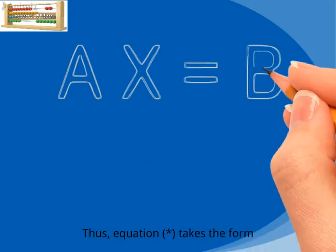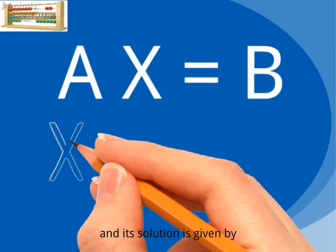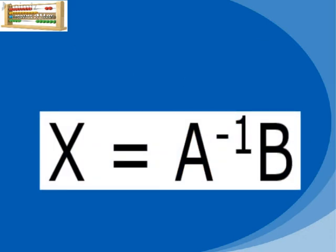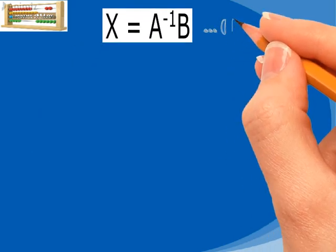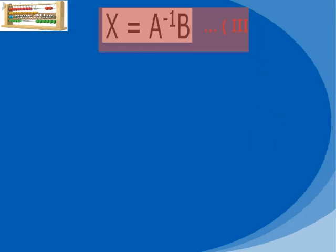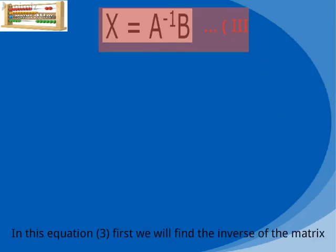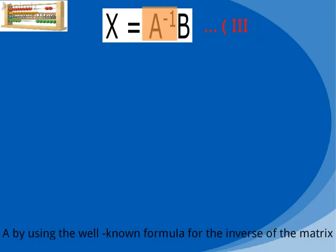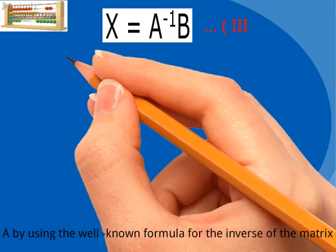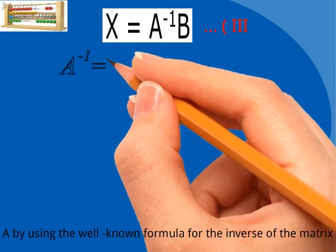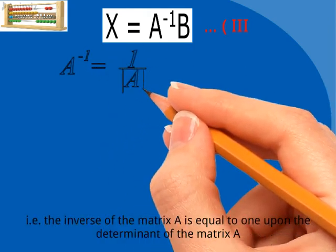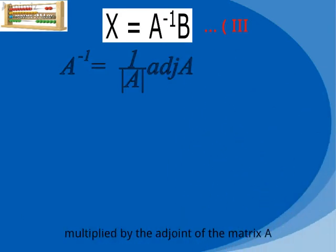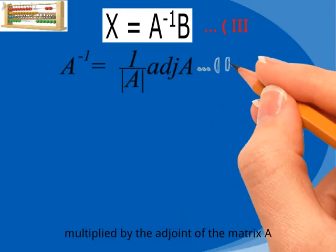Since matrices are denoted by uppercase letters, we denote the coefficient matrix by A, the matrix of unknown variables by X, and the matrix of constants by B. Thus, the equation takes the form AX = B, and its solution is given by X = A inverse times B. Let us mark this as equation 3. In equation 3, we first find the inverse of matrix A using the formula: A inverse equals 1 over the determinant of A, times the adjoint of A.